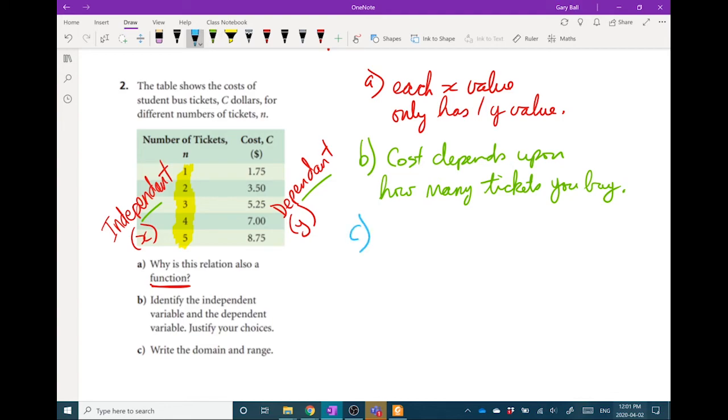All right, last question, C. What is the domain and range? Now domain, that's your x values. Now the smallest x value is 1. We're using the variable n. So n is greater than or equal to 1 but less than or equal to 5. 1 is my smallest, 5 is my biggest. That's my domain.